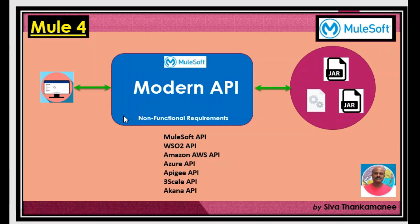This is where modern API managers come in. They provide all these functionalities built on top of an API manager, delivering features as policies that can be easily added or removed. New customers can be added and removed easily, roles can be defined, and client IDs and secrets can be issued. There are many well-known API management players available including MuleSoft, WSO2, Amazon AWS, Azure, APG, 3Scale, and Apigee.